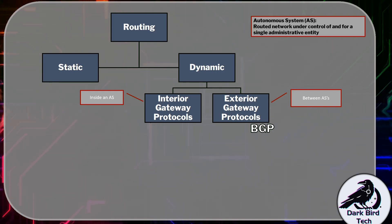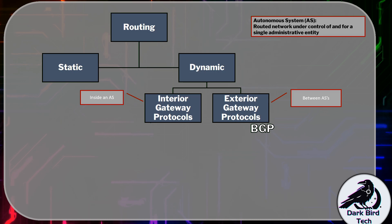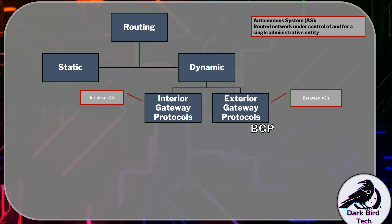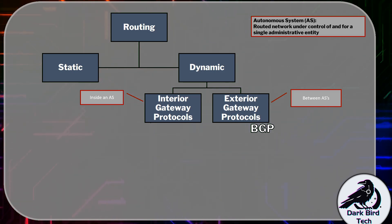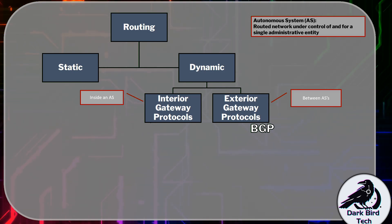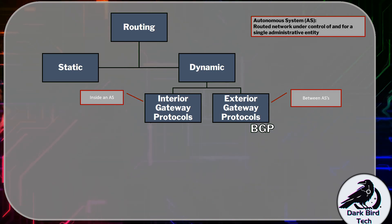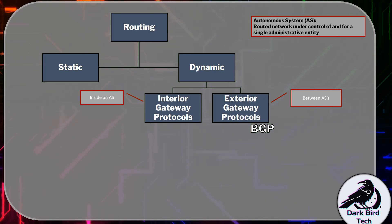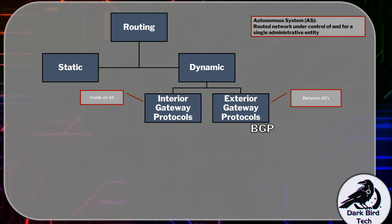Firstly, BGP has amazing summarization capabilities. You can have a router sitting in Europe, and it just needs a single routing table entry that points to North America. While the packet is in Europe, you don't care about exactly where in North America it's destined. But once that packet reaches a router in North America, the BGP routing table entry will be more precise — are we talking about Canada or the USA? The BGP routers will then move traffic to the autonomous system in the USA.